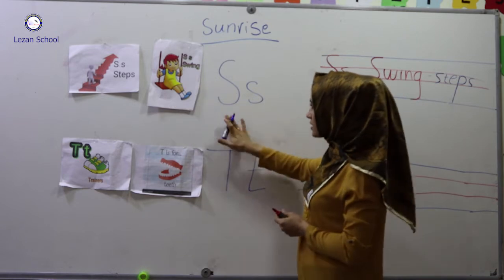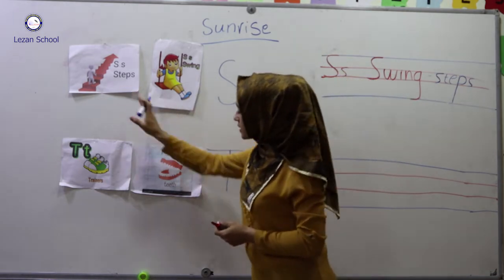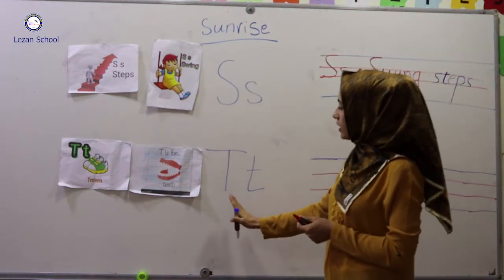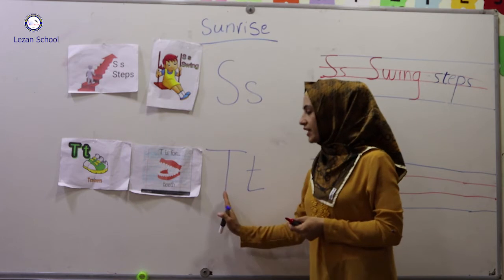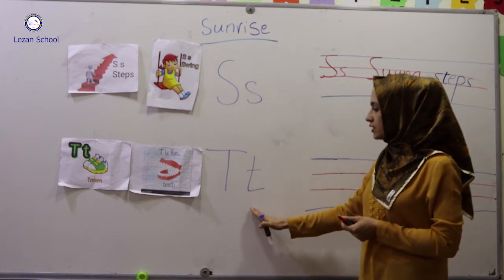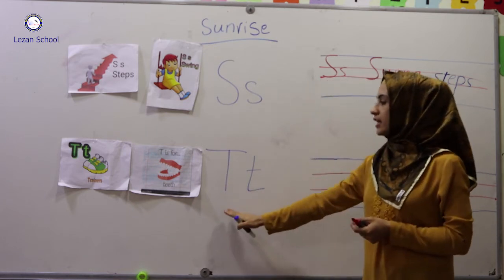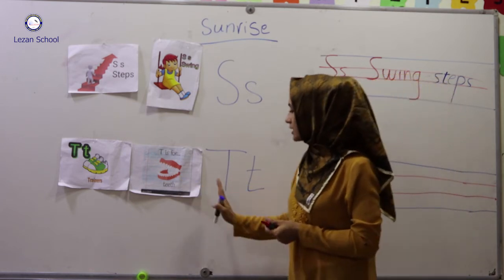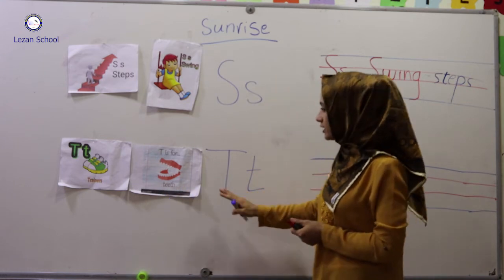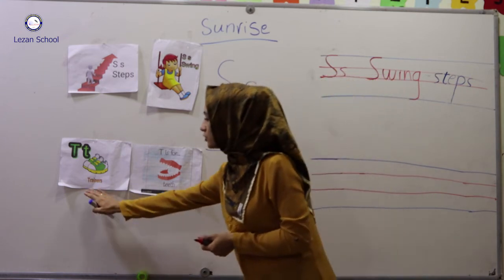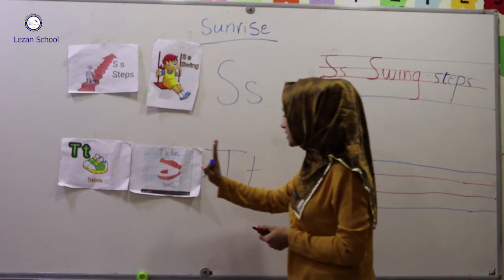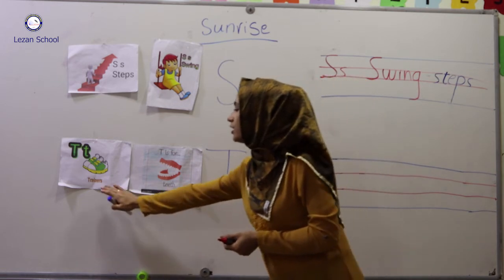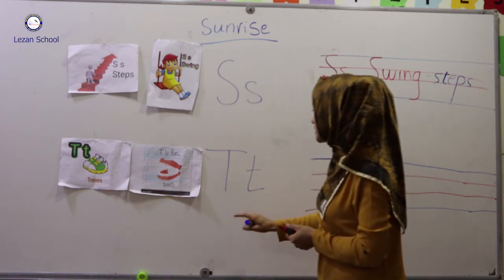C, swing. C, steps. And the second sound is T. T capital, T small. Let us give some examples: T, T, trainers.